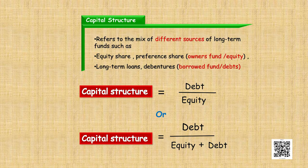Let us move ahead and discuss about capital structure. It refers to the mix of different sources of long-term funds such as equity shares and preference shares, which are owners funds, and long-term loans like debentures, which are part of borrowed funds or debts. Capital structure can be expressed as a proportion between debt to equity, or debt to total capital, that is debt to equity plus debt.